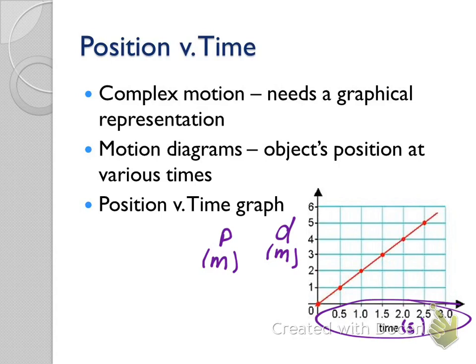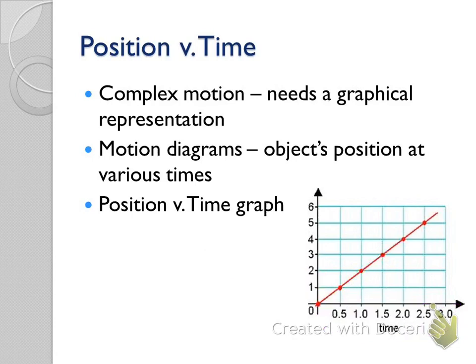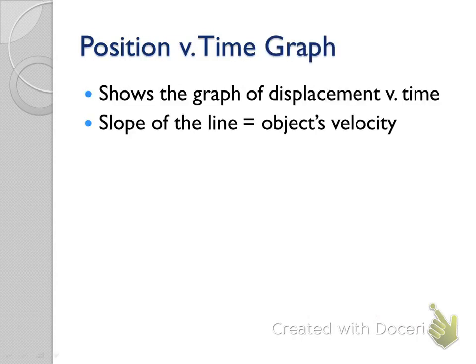Position versus time means — let's look at this graph specifically. After half a second, it's traveled one meter. After a whole second, it's traveled two meters. Another half a second, it's traveled three meters. That's very simple motion — we're moving at a constant speed. Every half a second, we're moving forward one meter. Distance over time is also known as speed or velocity. The slope of a line on a position versus time graph tells us our velocity — that's really important.